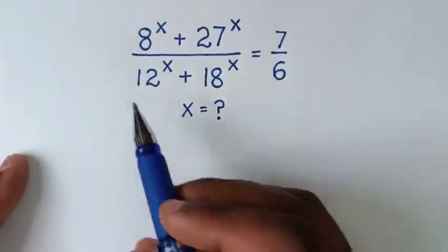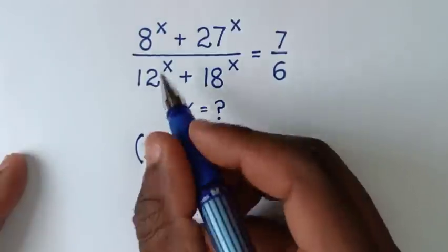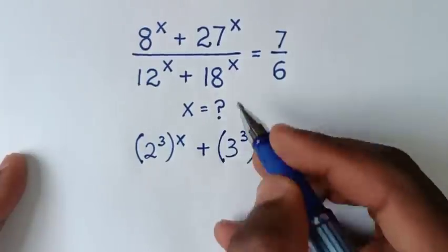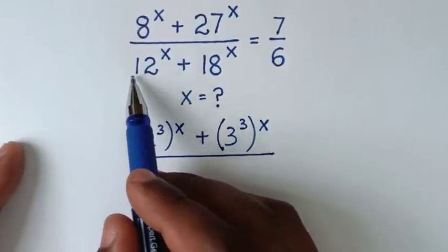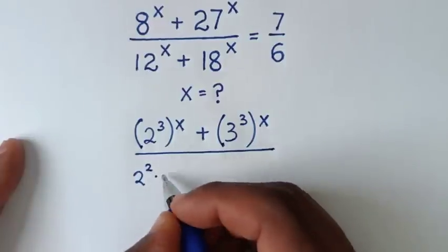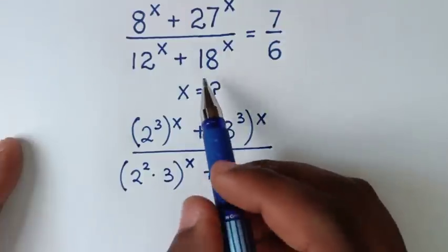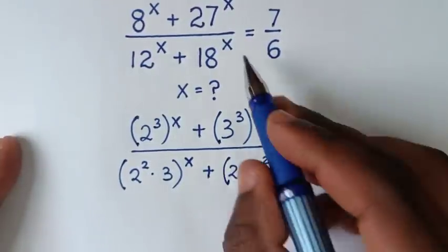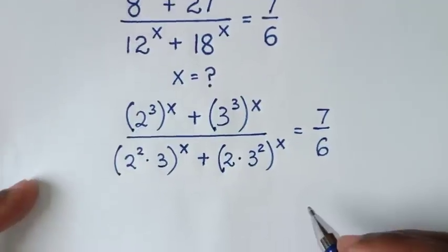We rewrite each base in terms of prime powers. 8 is the same as 2³, so 8^x = (2³)^x. 27 is the same as 3³, so 27^x = (3³)^x. In the denominator, 12 = 4 × 3 = 2² × 3, so 12^x = (2² × 3)^x. And 18 = 2 × 9 = 2 × 3², so 18^x = (2 × 3²)^x.